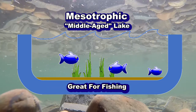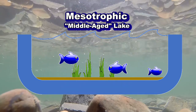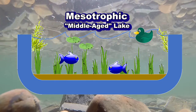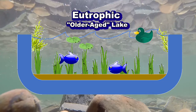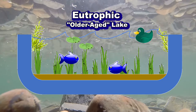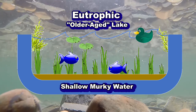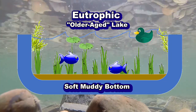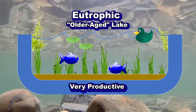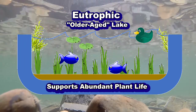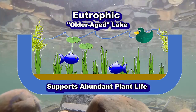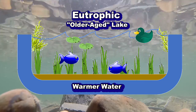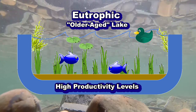These lakes are often great for fishing and are still good for swimming. Finally, once a lake becomes significantly filled in with sediment, it shifts from a mesotrophic lake to a eutrophic lake, or a mature lake with high levels of nutrients. These lakes generally have shallow, murky water with soft, muddy bottoms from all the sediment that has washed in over the years. Eutrophic lakes are also very productive and have high levels of nutrients, which supports abundant plant life. However, these lakes usually have lower levels of dissolved oxygen due to the warmer water and high productivity levels using up the available oxygen.